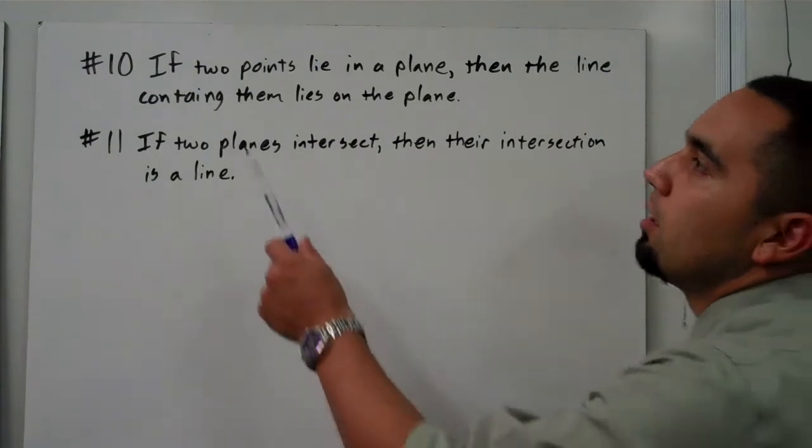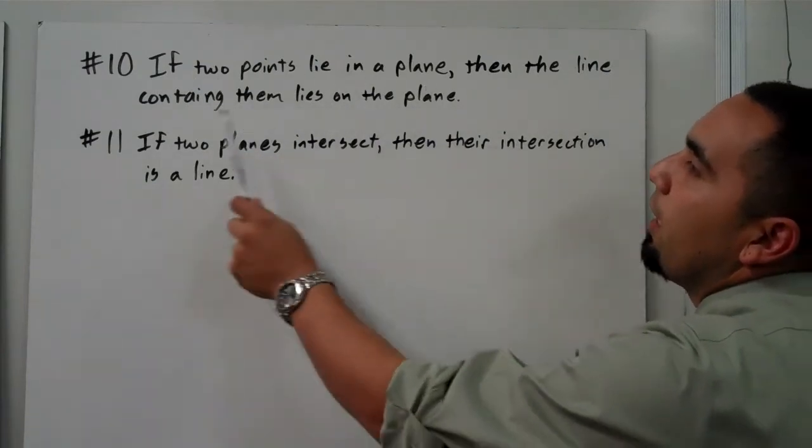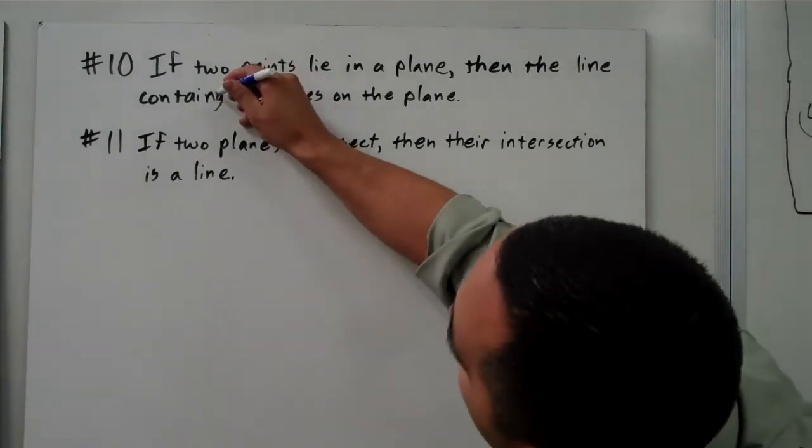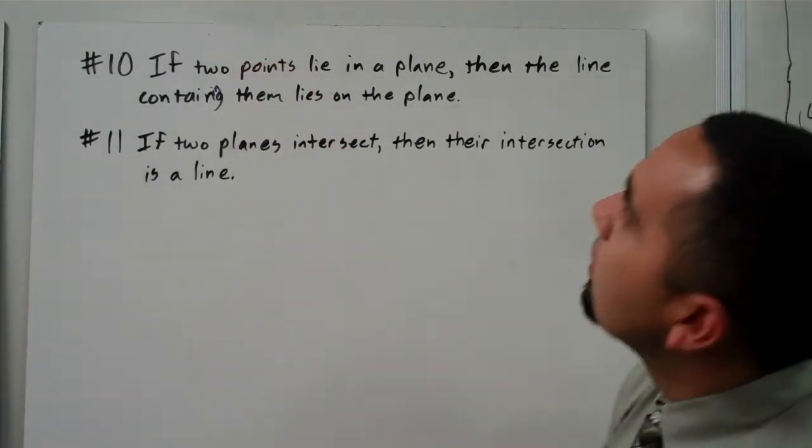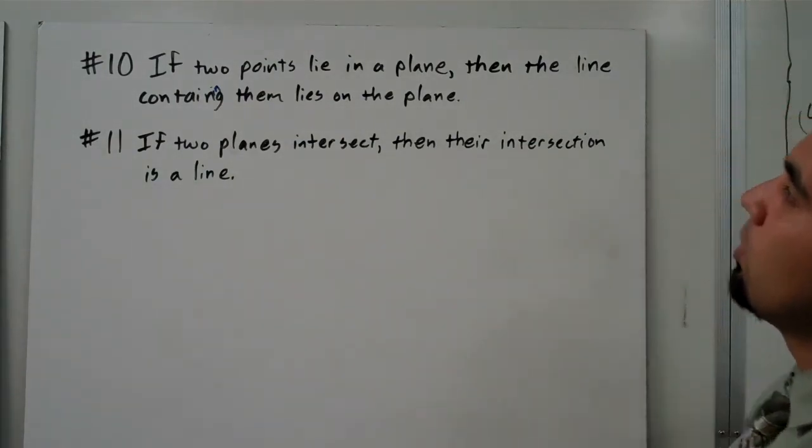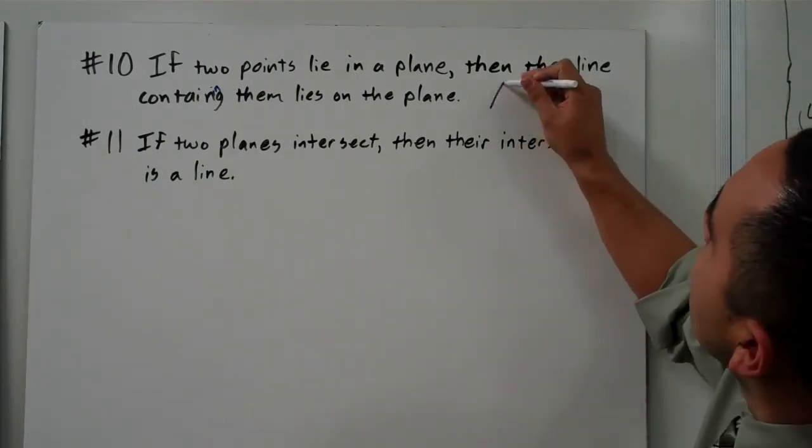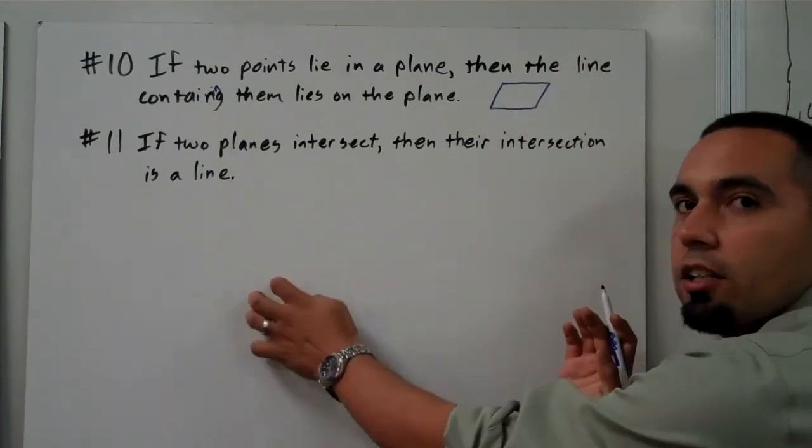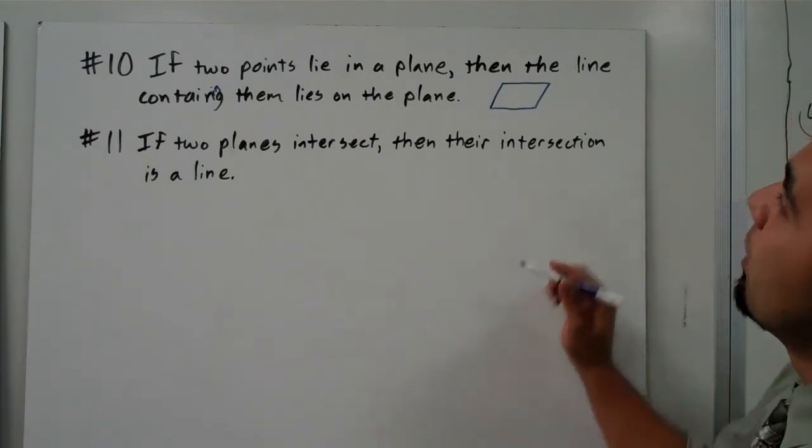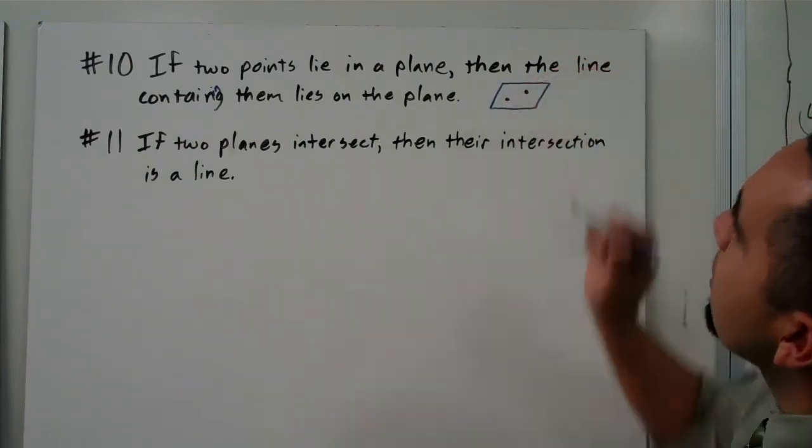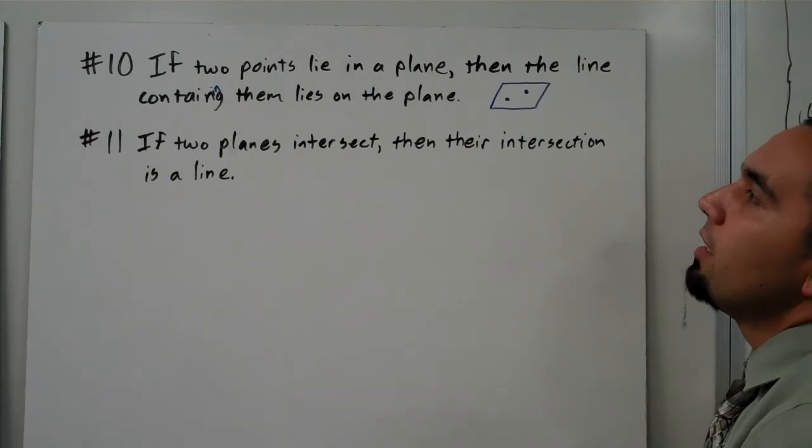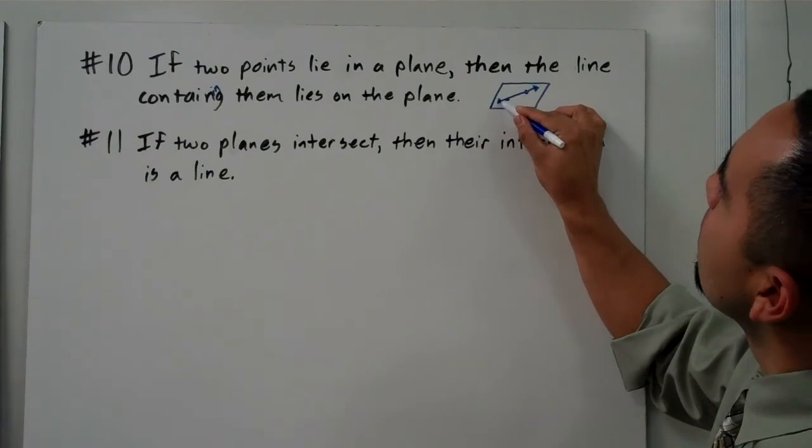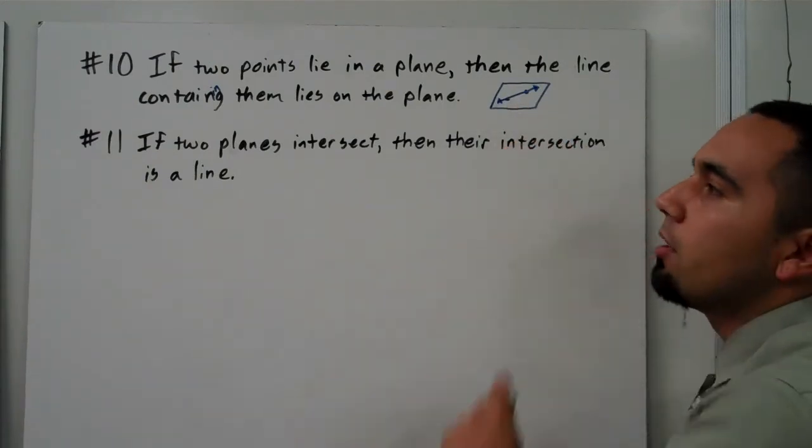Postulate number 10 says if two points lie in a plane, then the line containing, and I think I misspelled containing there, containing them lies on the plane. So again, if we draw a plane, remember you have to imagine it as being a flat surface just like this board here. If two points lie in a plane, well then we can put two points on that plane. Then the line containing them lies on the plane. Well, if I can draw the line through those two points, it's obviously that line is on the plane.